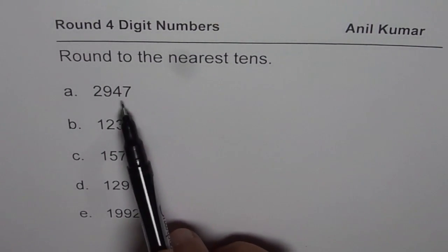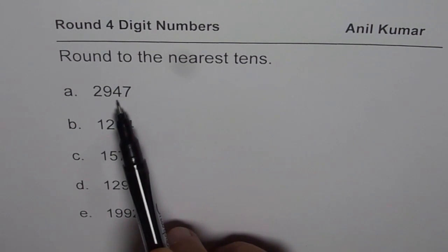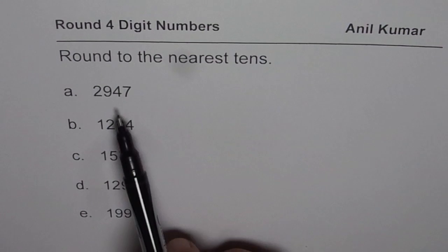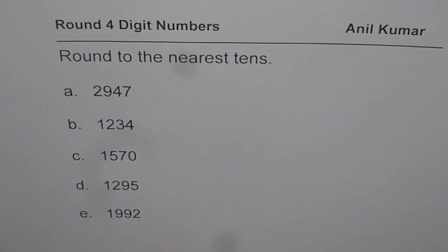Nearest tens means at the end, we could get 0, 0, 0. We could get 10, 20, 30, 40, 50, 60, 70, 80, 90. Or 100 means 0, 0.